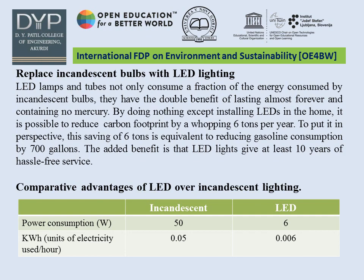Replace incandescent bulbs with LED lighting. LED lamps and tubes not only consume a fraction of the energy consumed by incandescent bulbs, they have the double benefit of lasting almost forever and containing no mercury. By doing nothing except installing LEDs in the home, it is possible to reduce carbon footprint by approximately 6 tons per year. This saving of 6 tons is equivalent to reducing gasoline consumption by 700 gallons. The added benefit is that LED lights give at least 10 years of hassle-free service.